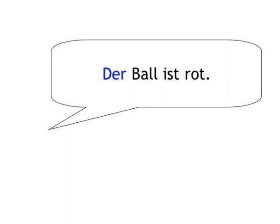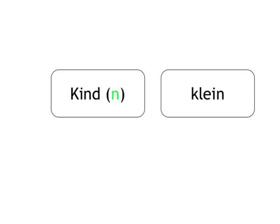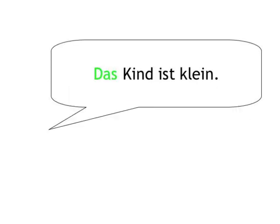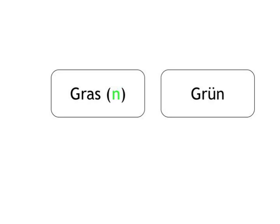Kind. Klein. Das Kind ist klein. Gras. Grün. Das Gras ist grün.